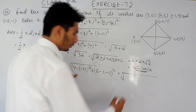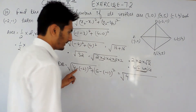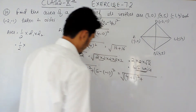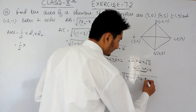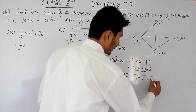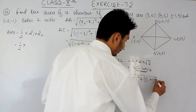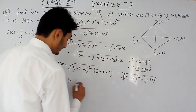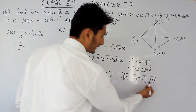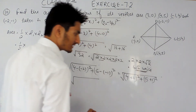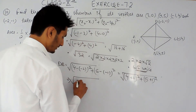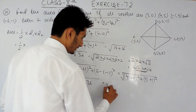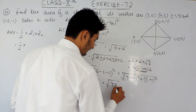Solving further: (4 plus 2) is 6 squared, and (5 plus 1) is 6 squared. So we get the square root of 36 plus 36, which equals the square root of 72.